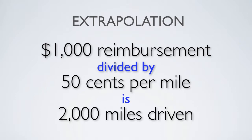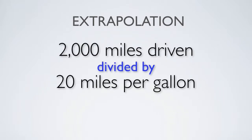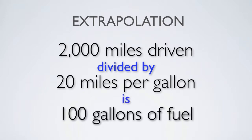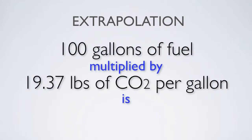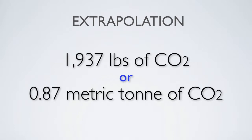Now, if we can determine the fuel efficiency of the employee's vehicle, we can calculate how many gallons of fuel were consumed. Let's suppose that the employee's car averages 20 miles per gallon. Then, traveling 2,000 miles would result in the combustion of 100 gallons of fuel. By multiplying the emission factor of gasoline, which is 19.37 pounds of CO2 per gallon, we can deduce that this employee's business travel emitted 1,937 pounds, or 0.87 metric ton of CO2 into the atmosphere.